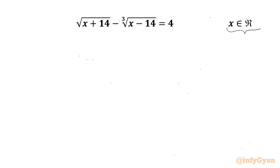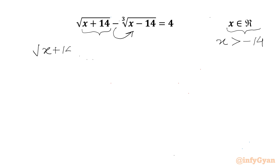For x to be real, this radicand must be positive, so x should be greater than negative 14. Now I will take this minus into the cube root, so our equation becomes: square root of (x + 14) plus cube root of (negative x + 14) equals 4.